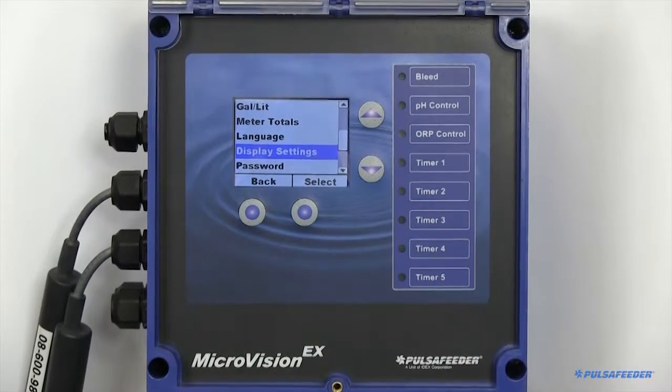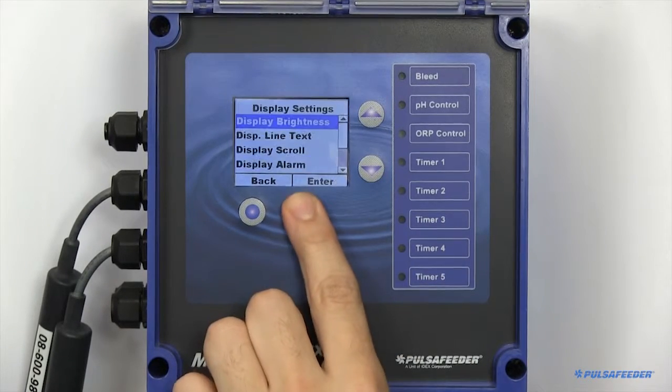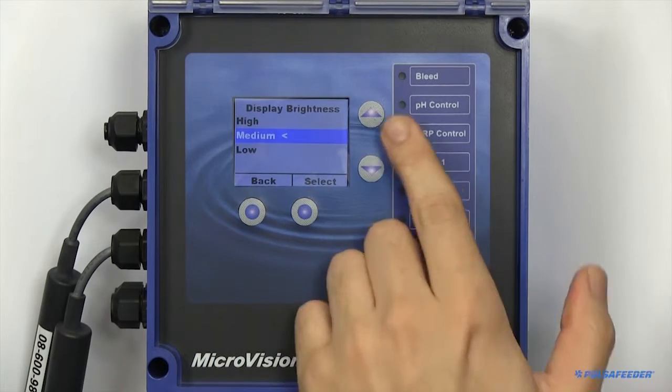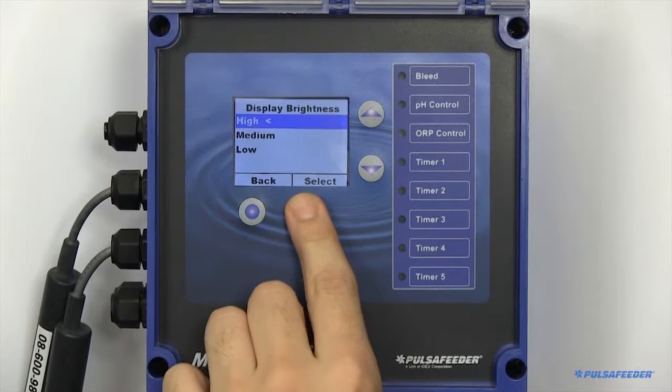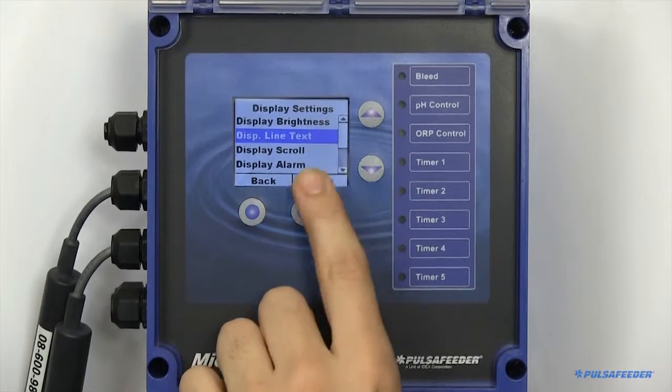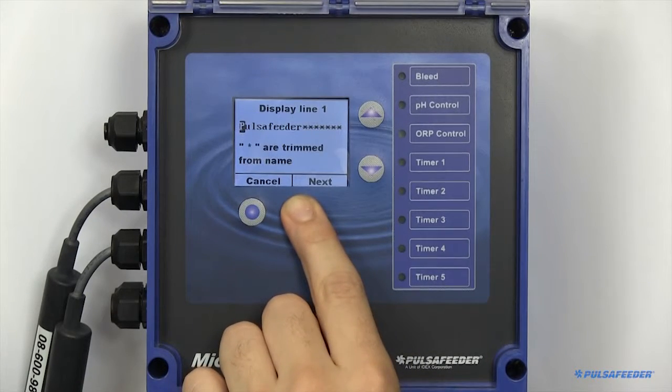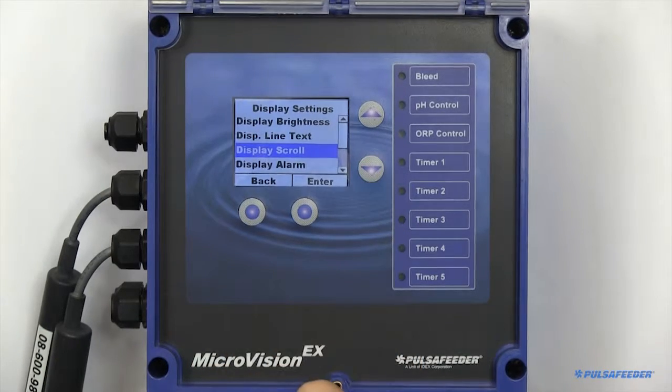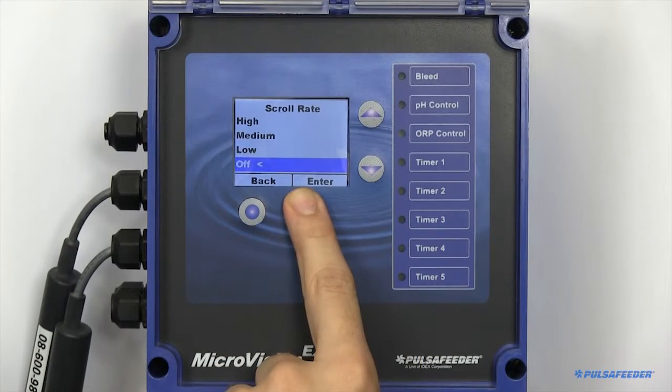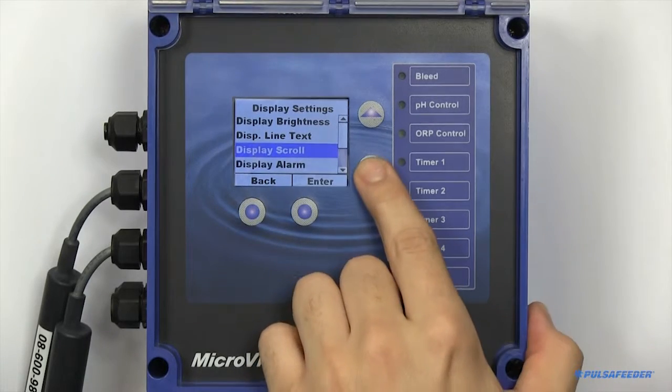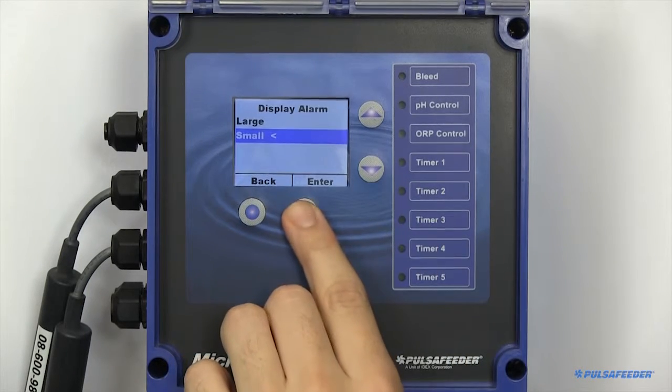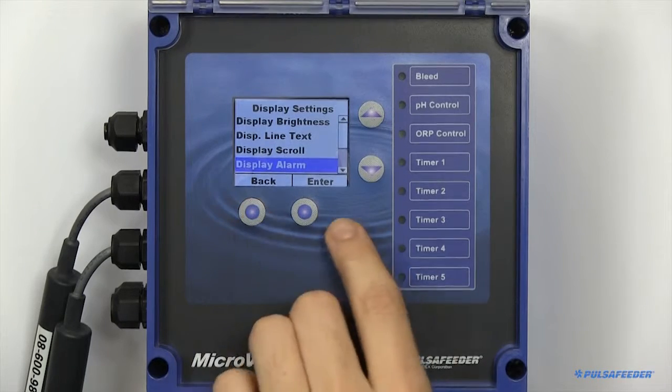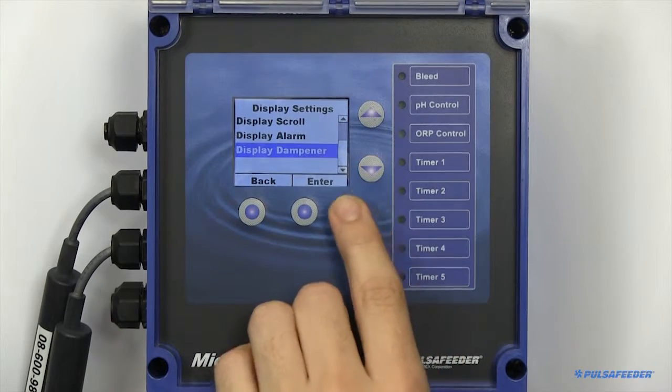Your display can be dynamically set up. You can adjust your contrast or brightness levels, adjust the name of the controller which appears in the home screen, configure the home screen to scroll automatically, resize your alarm notifications, and configure a display dampener.